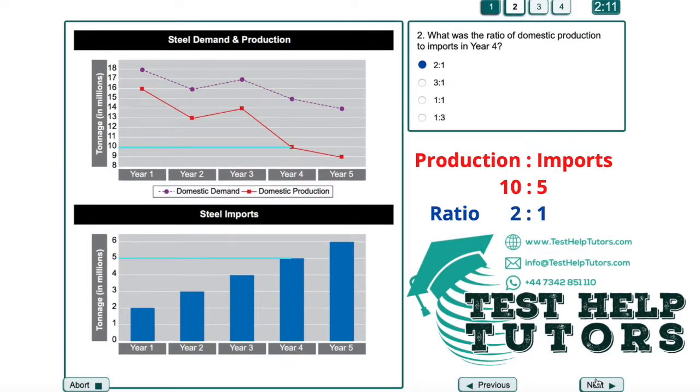I hope you've had a go. What was the ratio of domestic production to imports in year 4?